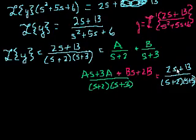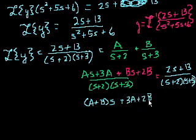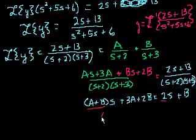So we have a plus bs plus 3a plus 2b is equal to 2s plus 13. So the coefficient on s on the right-hand side is 2. The coefficient on the left-hand side is a plus b. So we know that a plus b is equal to 2.